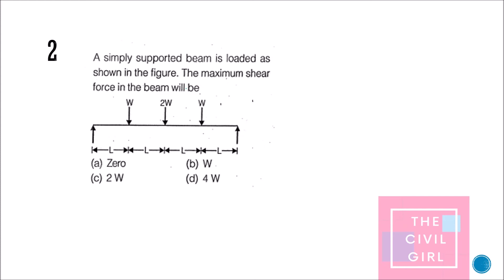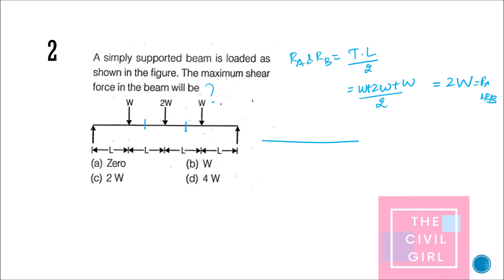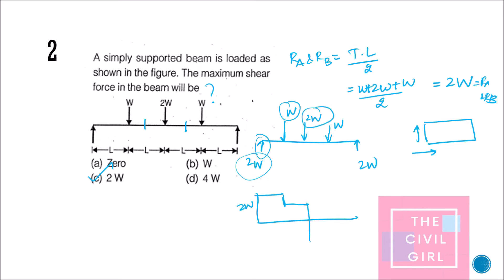Next question: a simply supported beam is loaded as shown — what is the maximum shear force? Since the loading is symmetrical, Ra and Rb are equal. Total load is w + 2w + w/2 = 4w, so Ra = Rb = 4w/2 = 2w. In a simply supported beam the maximum shear force acts at the ends, so the maximum shear force is 2w. The answer is 2w.